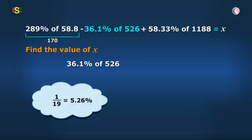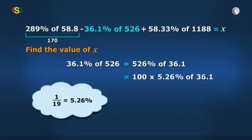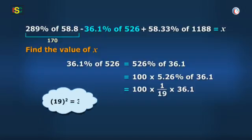36.1% of 526 is same as 526% of 36.1. So, it will be 100 into 5.26% of 36.1. And now, as I remember, that percentage equivalent of 1 by 19 is 5.26%. So, I get 100 into 1 by 19 into 36.1. So, it will be 100 into 1.9. That is 190.